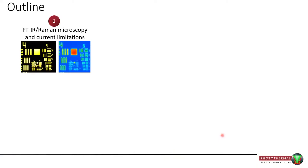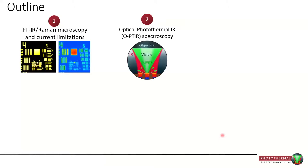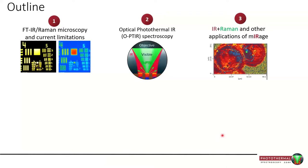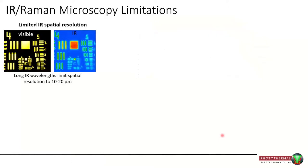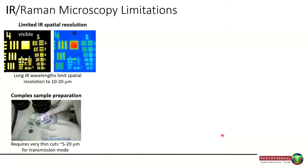Today I'll take you through background on FTIR and Raman and their current limitations. For those familiar with infrared and Raman spectroscopy, one of the main issues is that infrared has reached its fundamental maturity and technical limits around infrared spatial resolution. Working with long infrared wavelengths means our spatial resolution is naturally limited.